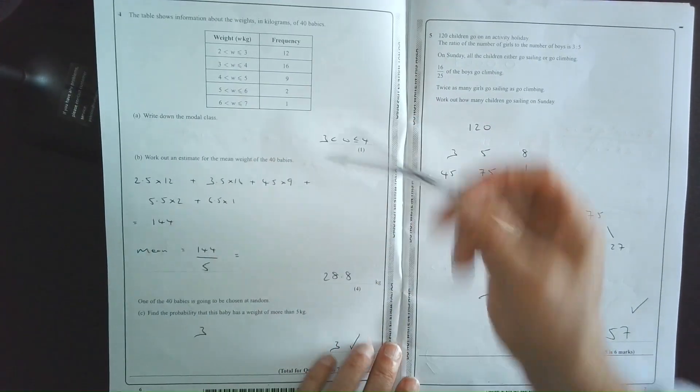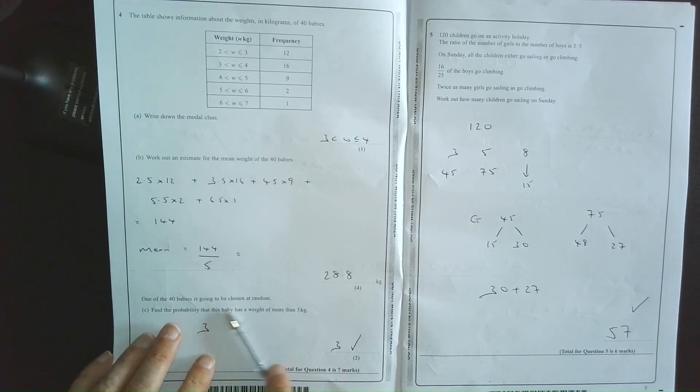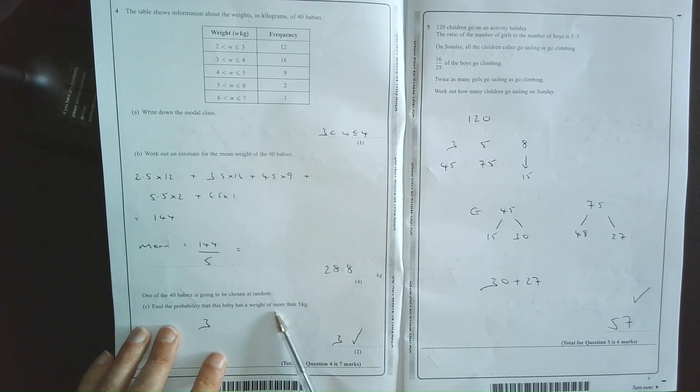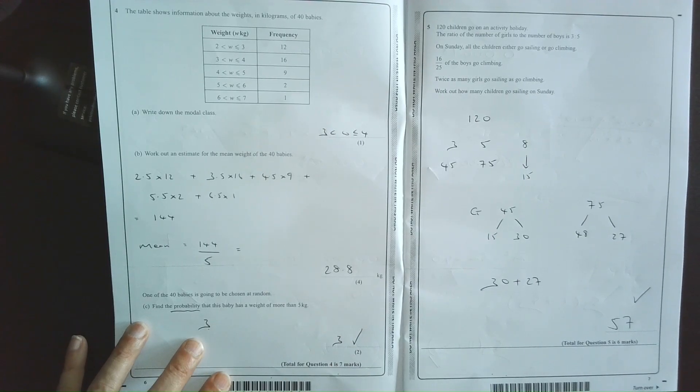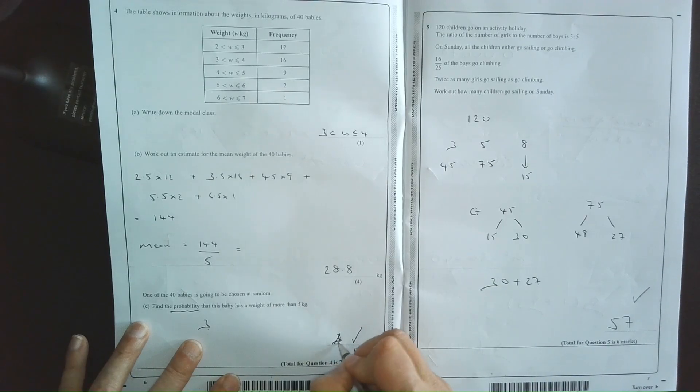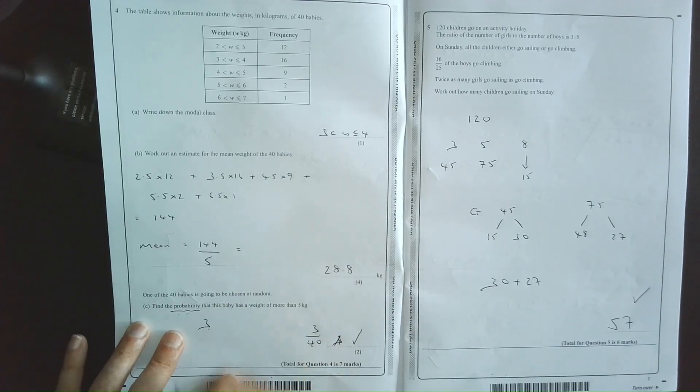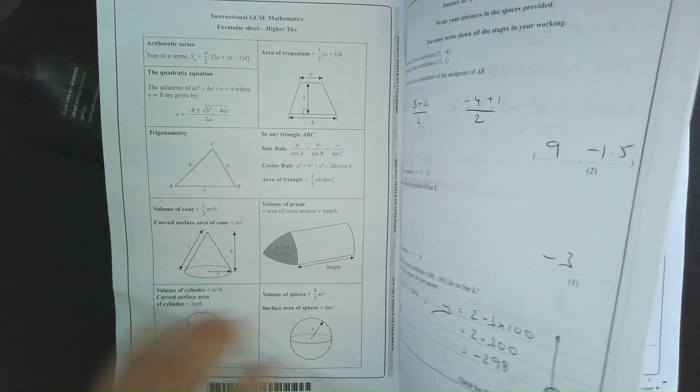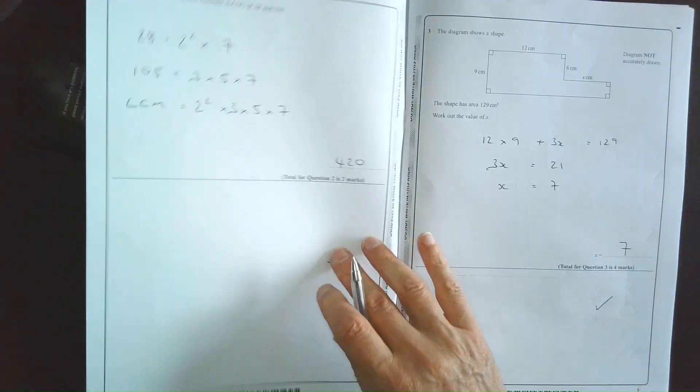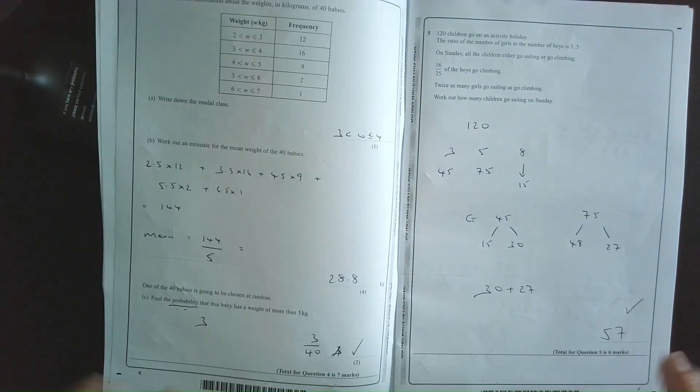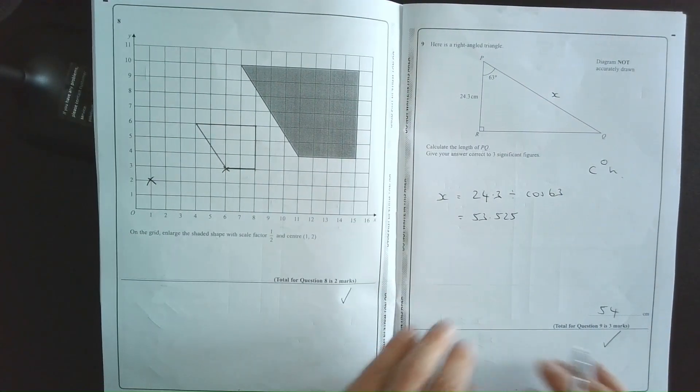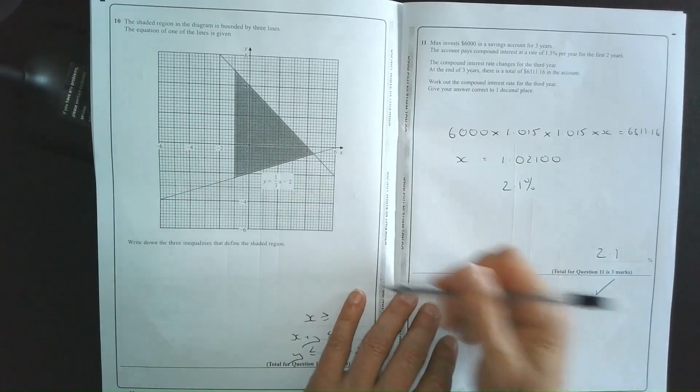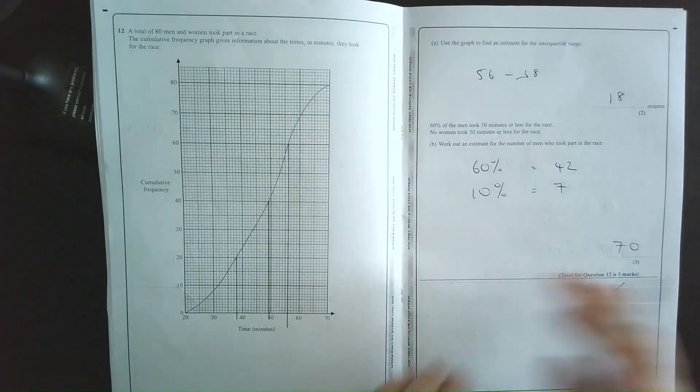Let's have a look at number 4. Of the 40 babies, one is going to be chosen at random. Find the probability that this baby has a weight of more than 5 kilograms. And I've written 3. That's not the probability that the baby has a weight of more than 5 kilograms. That's how many babies have a weight of 5 kilograms or more. I needed to say 3 out of 40. So again, I failed to answer the question. By the way, as you're doing this each time, tick to show you know that you have actually answered the question. So you're checking each one.